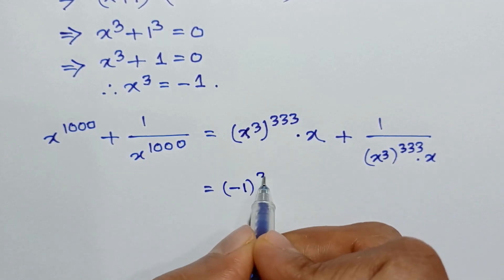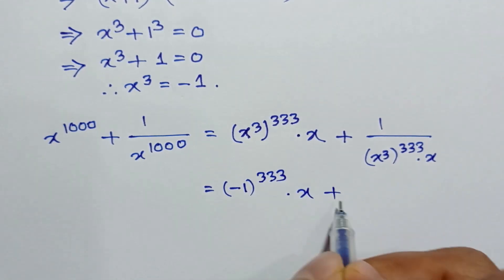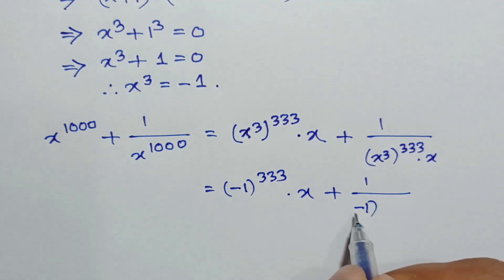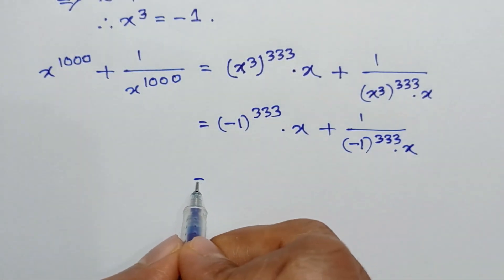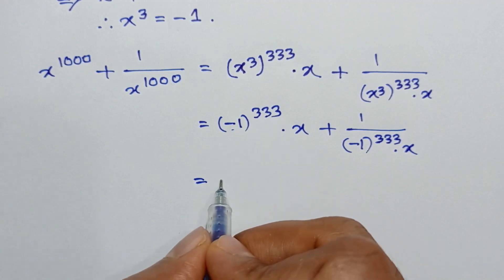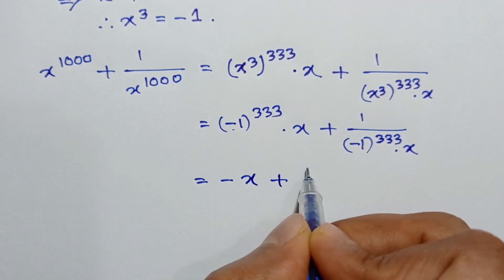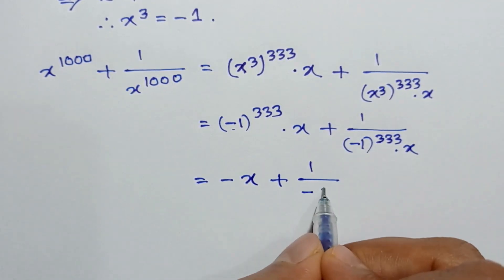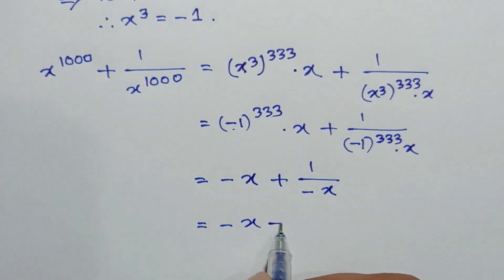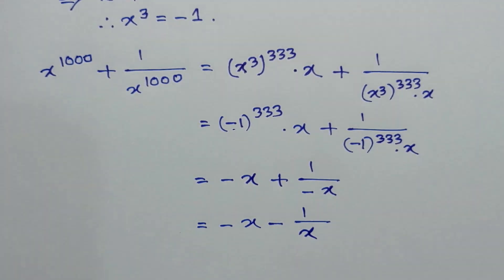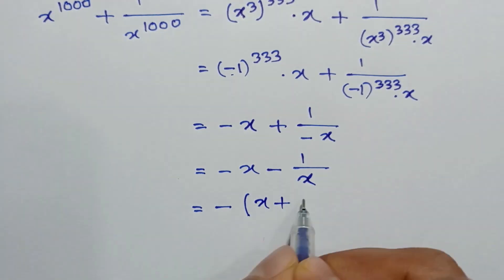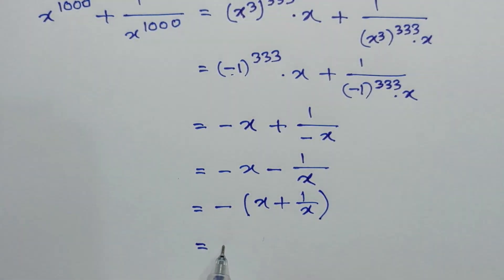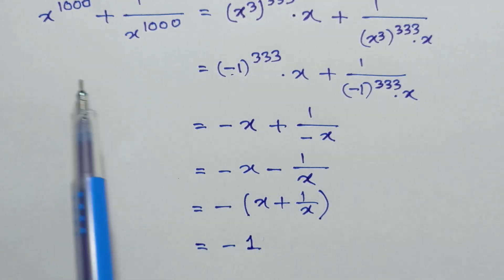Since the value of x cubed is negative 1, substituting we get negative 1 to the power 333 times x, plus 1 over negative 1 to the power 333 times x. This gives us negative x plus 1 over negative x. Taking out the common factor of negative 1, we have negative times x plus 1 over x, which equals negative 1, since x plus 1 over x equals 1.